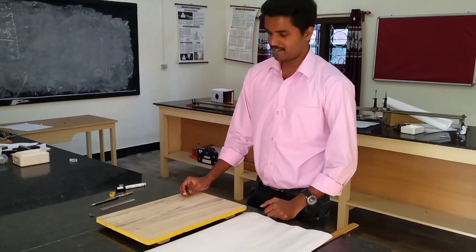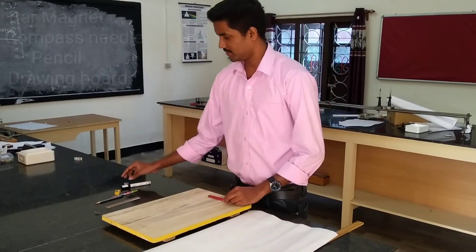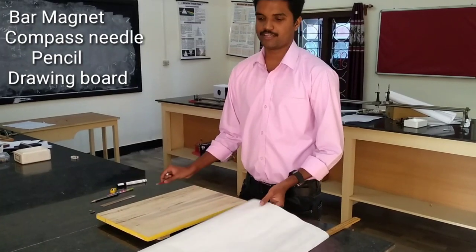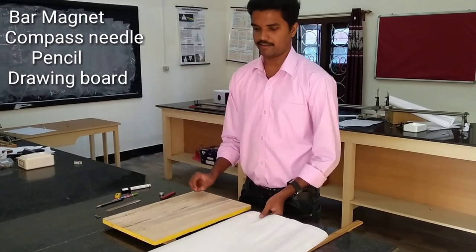For doing this experiment, we need a bar magnet, a small compass needle, a drawing board along with a drawing sheet and all the pencil and scalar compasses.